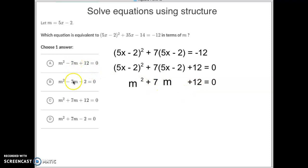Here's another 5x minus 2, so I'm going to replace that with an m term, and it becomes 7m plus 12. Now, which answer does it line up with? You're going to see m squared plus 7m plus 12. It is letter C.